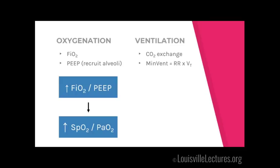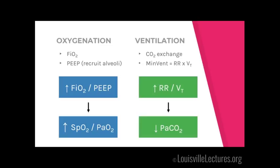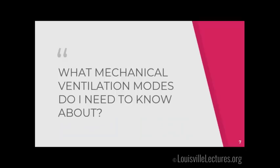The other thing is ventilation — CO2 exchange — which depends completely on your minute ventilation: respiratory rate times tidal volume. The more air you move in a minute, the more CO2 you'll blow off. Blowing off CO2 means taking out more arterial carbon dioxide and lowering PaCO2, which should fix a respiratory acidosis. The key concept: FiO2 and PEEP run your oxygenation show, while tidal volume and respiratory rate — more importantly, minute ventilation — run your CO2 show.